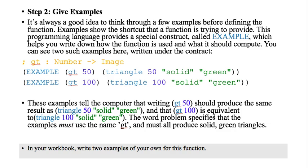So step two, remember we're doing our steps for how to write a program based on a word problem. Step one was to make a contract. Step two, it's always a good idea to think through a few examples before you actually define your function. Examples show how the shortcut is going to be used. This programming language that we're using in Racket provides a special function called EXAMPLE in all caps, which helps you write down how the function is used and what it should compute. So here's a couple of examples of the example.